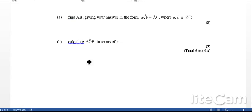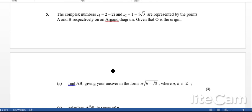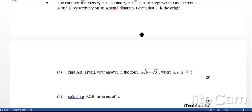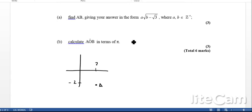Whenever you get this kind of question, wherever possible, try to do some sketch to show yourself what's happening. We've got z₁ is 2-2i, so let's put this on here. That's 2, that's -2, so that's point A. This is the imaginary axis, this is the real axis. The other point is 1-√3.